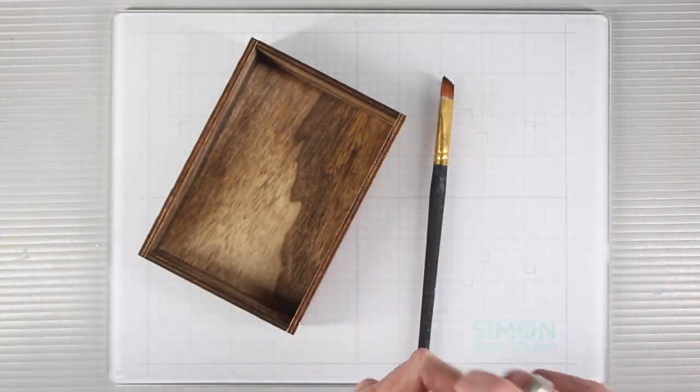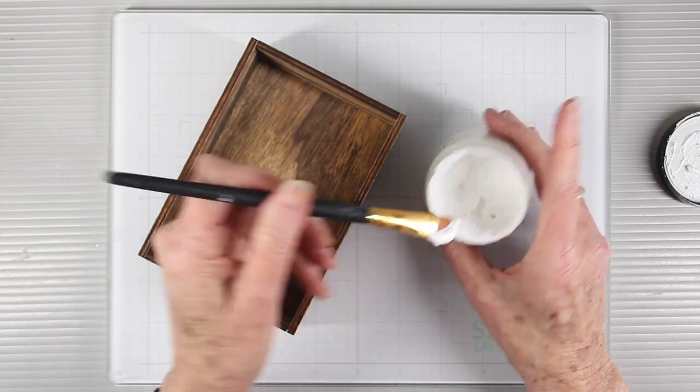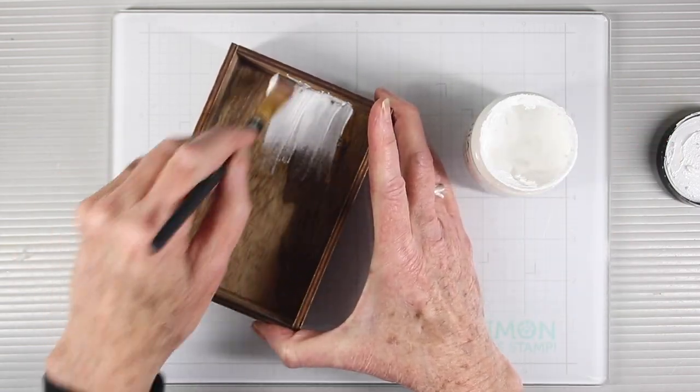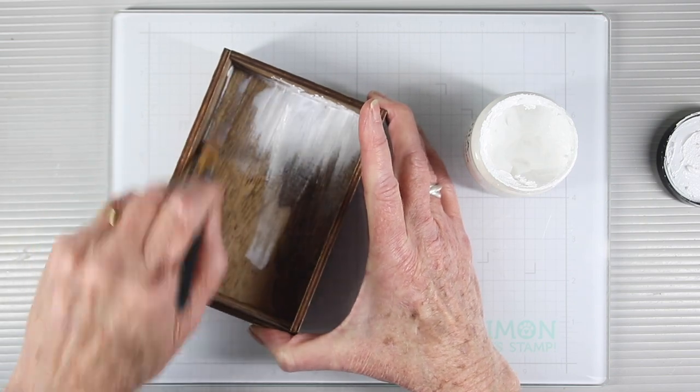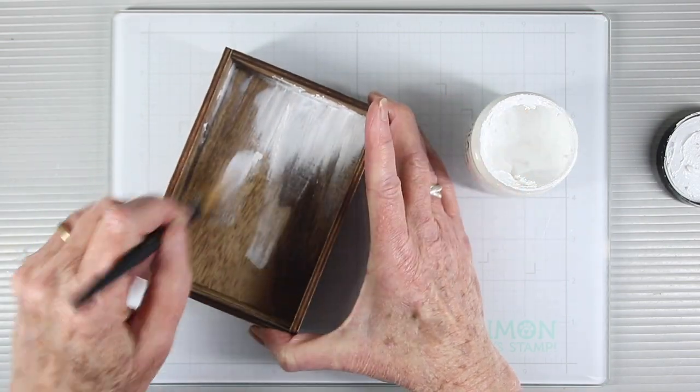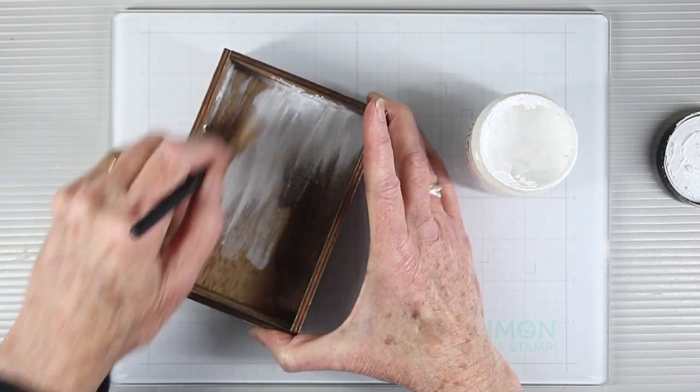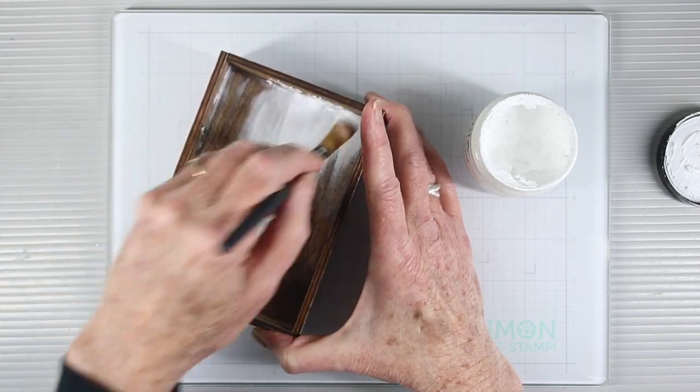I'm going to start off by priming the inside of the box using some Dina Wakeley white gesso. What this gesso is going to do is lock any of the stain from the box coming through. I'll be adding some crackle paste for the next layer and I just want it to be white with dry brush strokes.